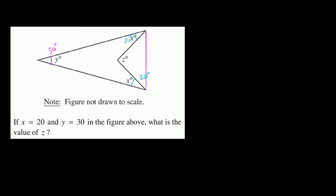We could say the measure of this angle is a degrees, and the measure of this angle is b degrees. What do we know? Well, a plus b plus z are all the interior angles of this smaller triangle, so they add up to 180.